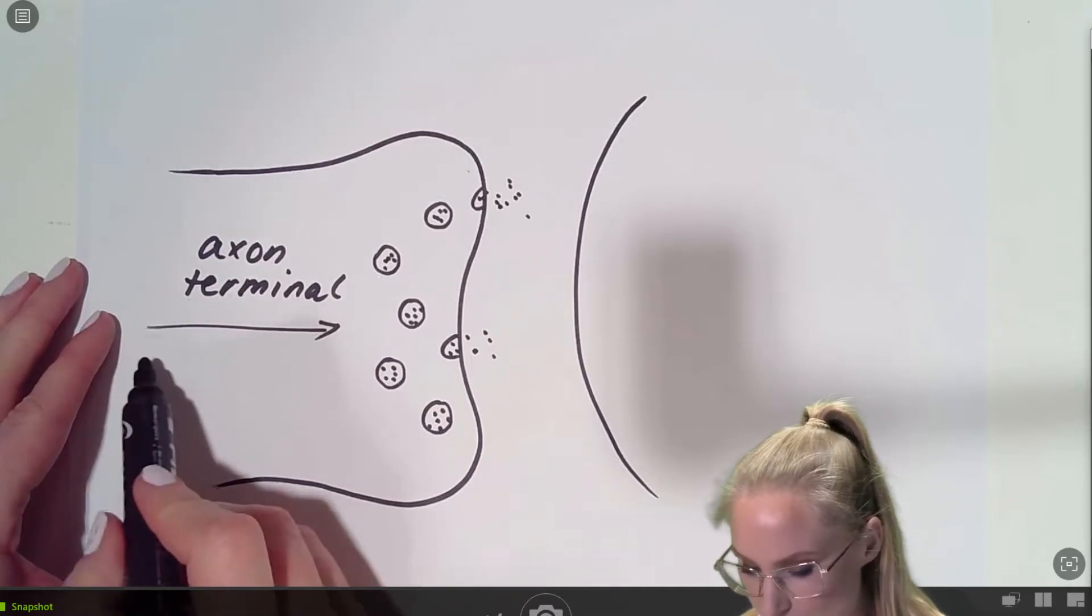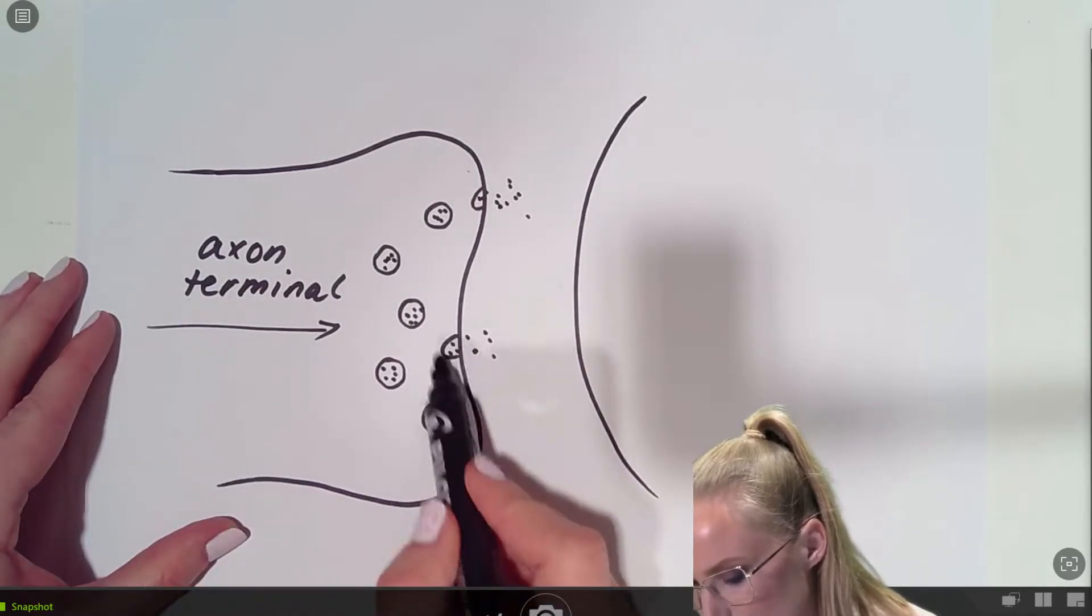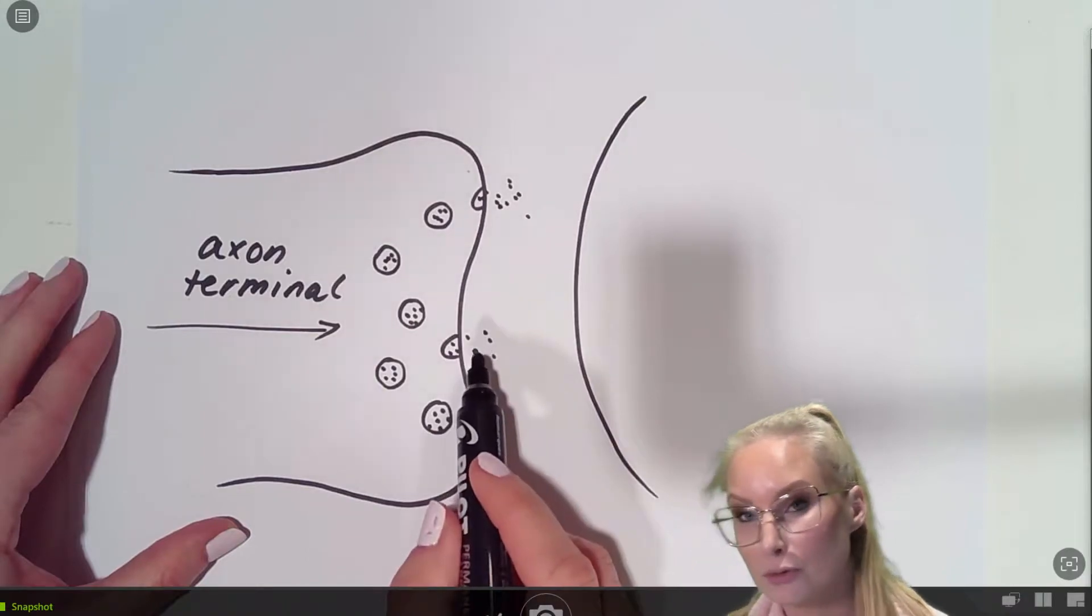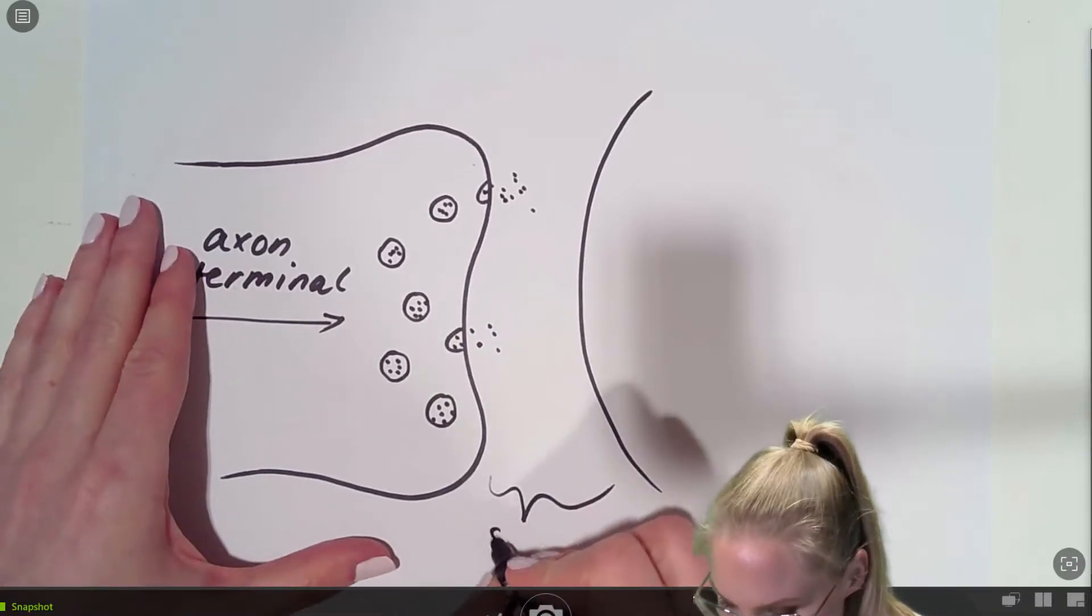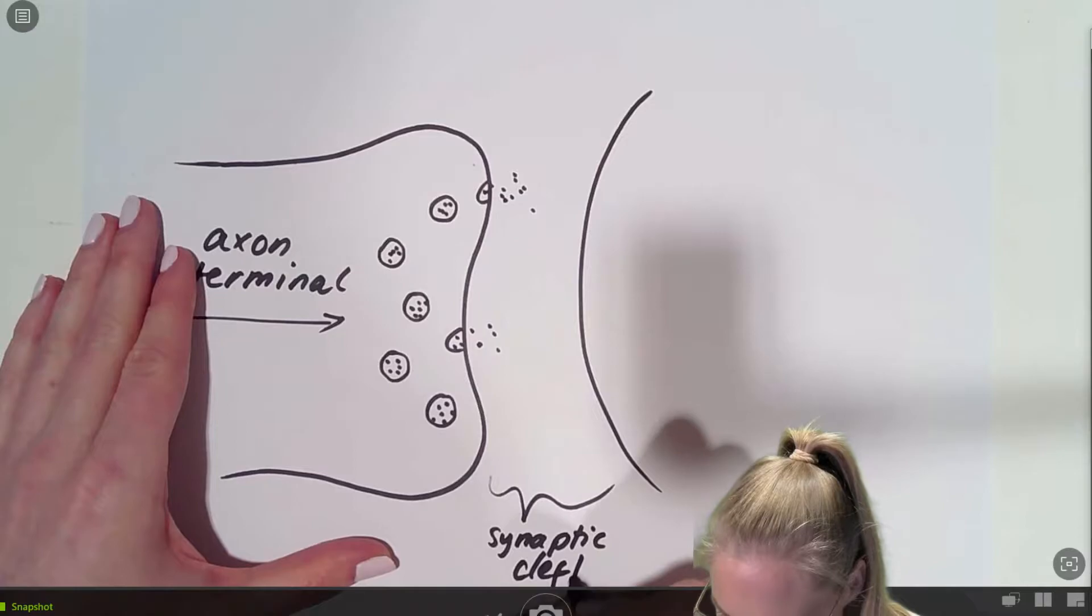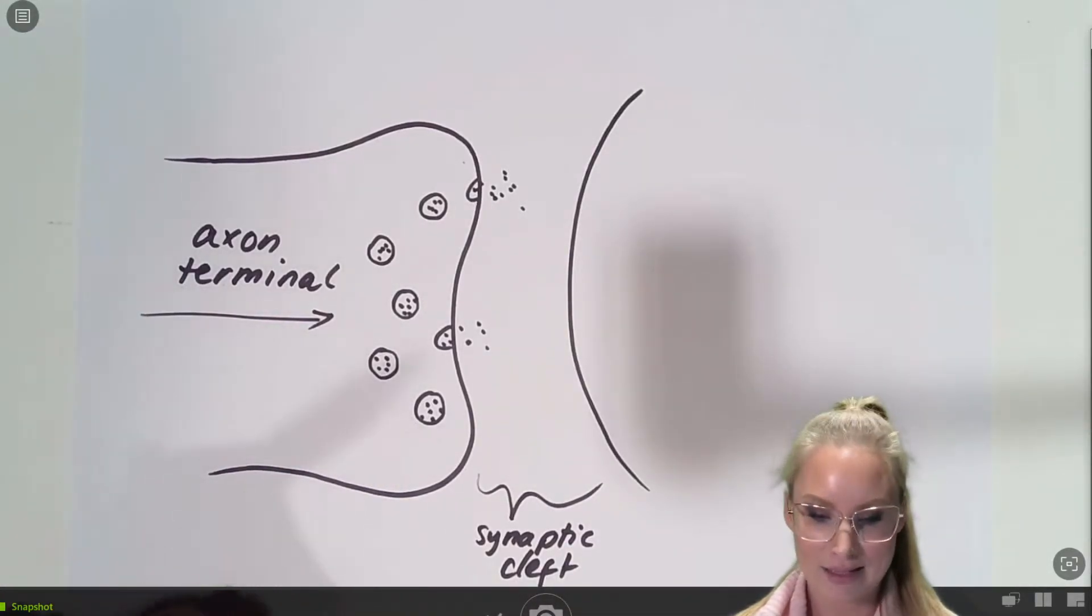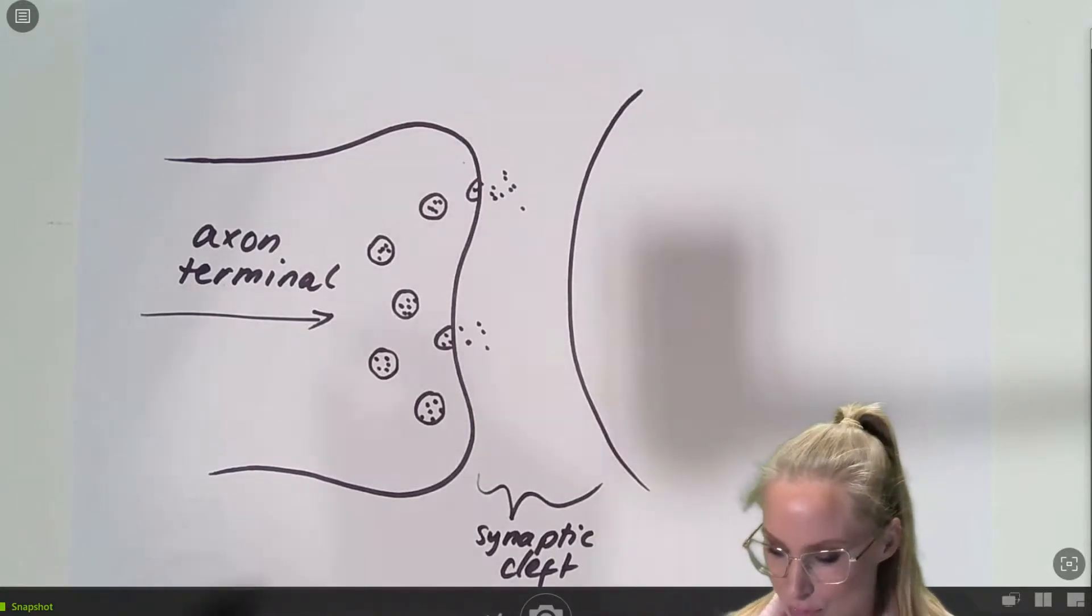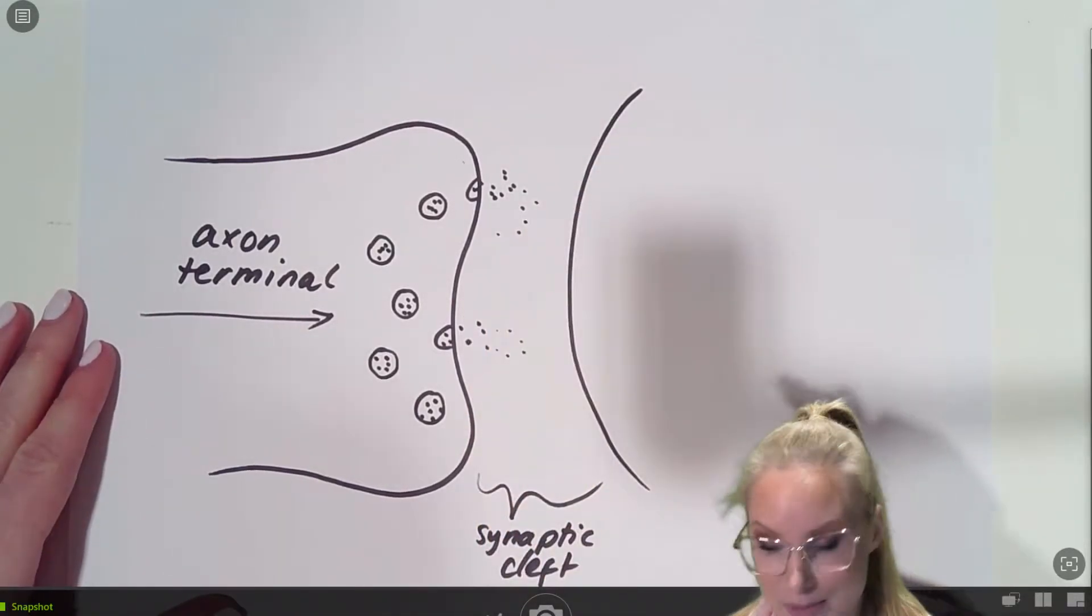So we have this signal, this action potential, coming down into the axon terminal, causing these vesicles to release their contents full of neurotransmitter into this region here. We call this region here the synaptic cleft. And the synaptic cleft is so tiny. It's 40 nanometers, which is about one two-thousandth the width of a human hair. It is so small. So we have all these neurotransmitter molecules sitting here in this synaptic cleft.